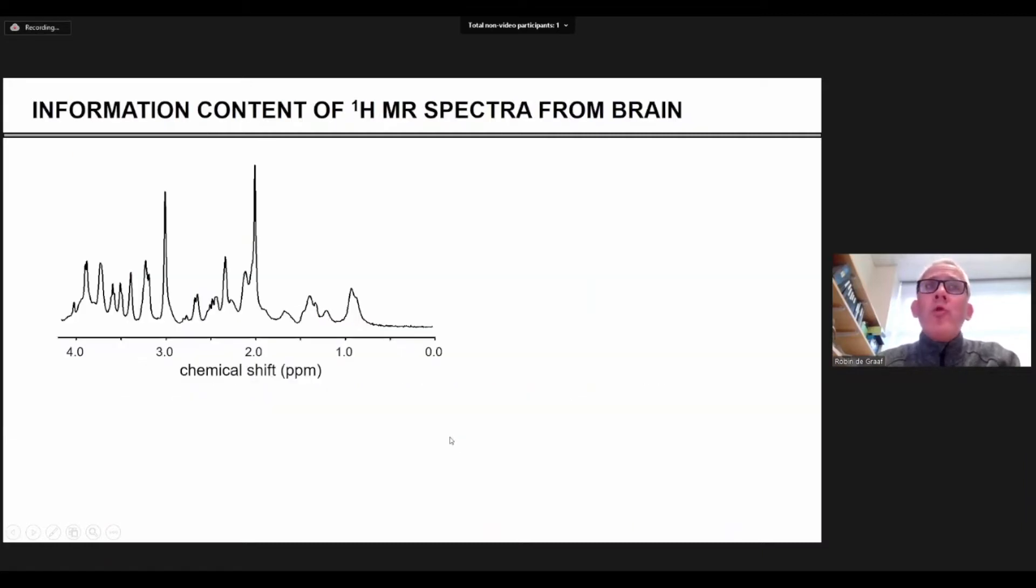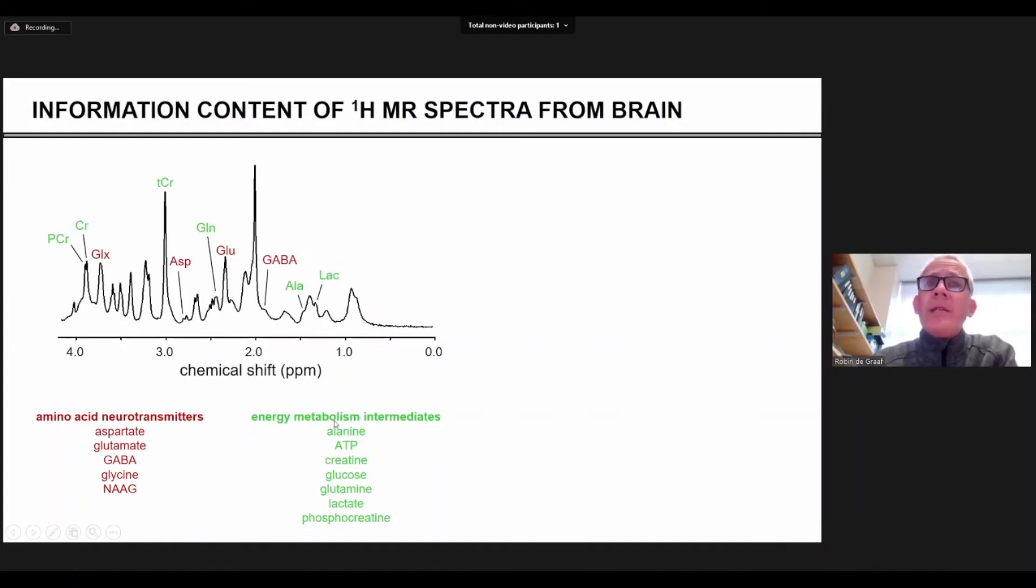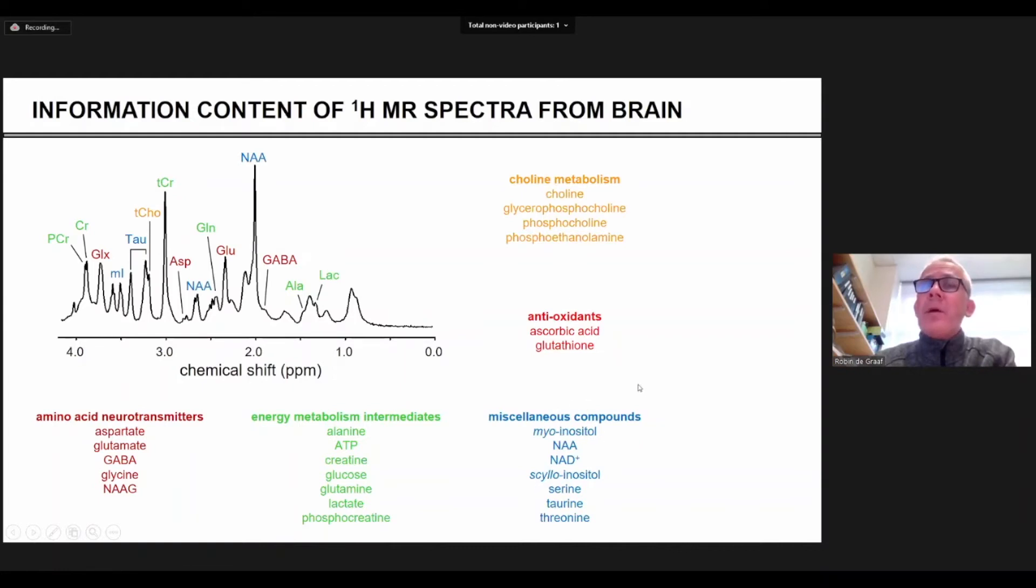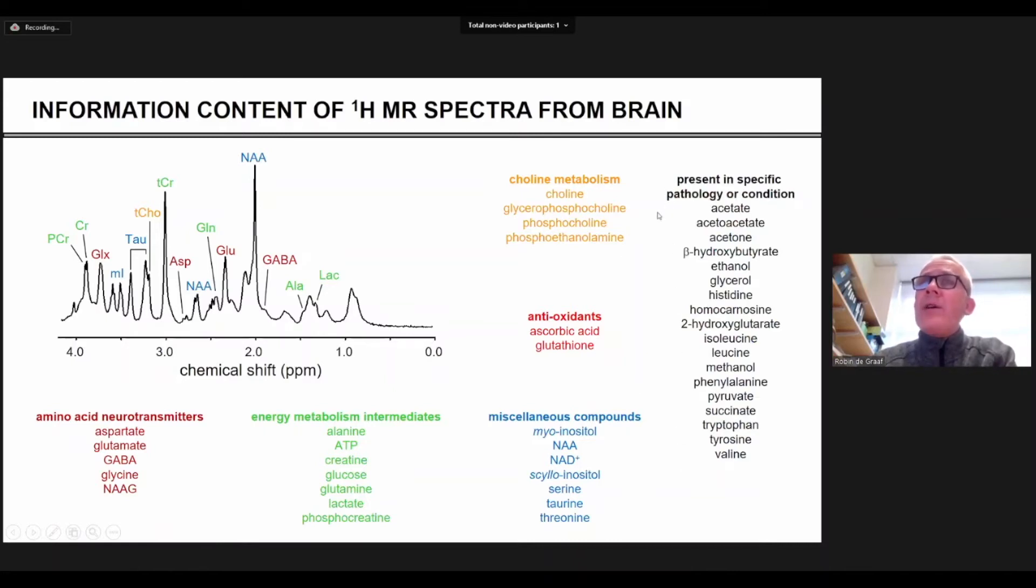Now what can we do with proton MRS? So this is a proton MR spectrum from brain. There's a lot of signals in there. And some of the most important ones are from the amino acid neurotransmitters, glutamate, GABA. There's also signals that relate to energy metabolism intermediates. And there's a whole bunch of other ones, antioxidants, choline, etc. There's also a long list of metabolites that you normally don't see, but they are visible in specific pathologies or specific conditions. So what can you do with a proton MR spectrum?